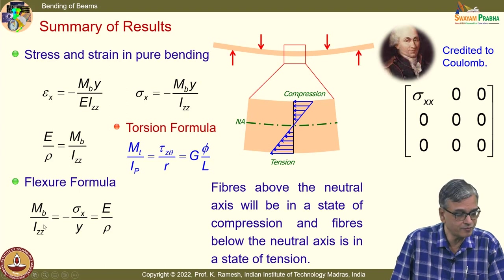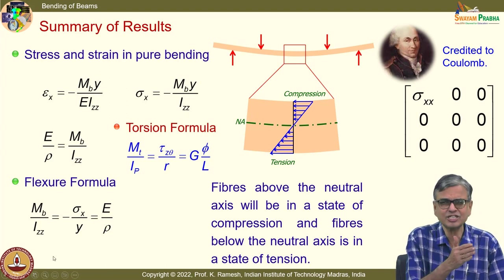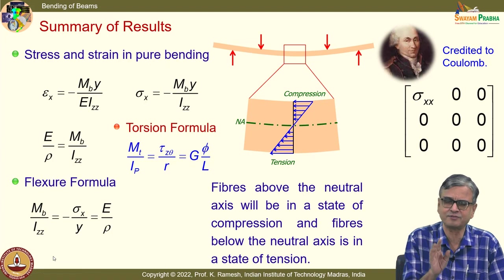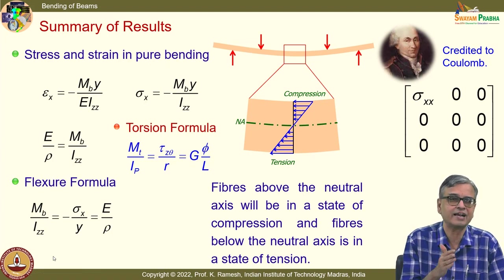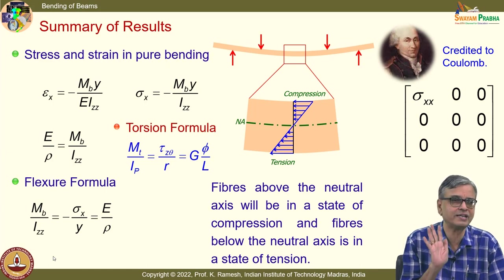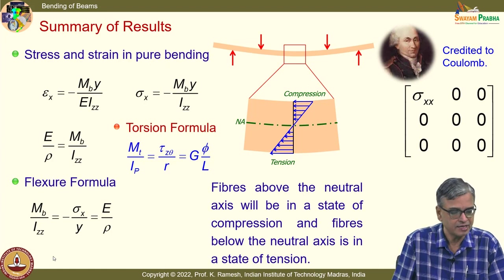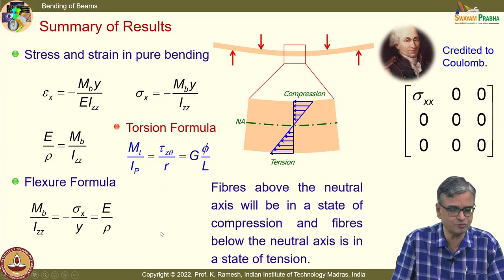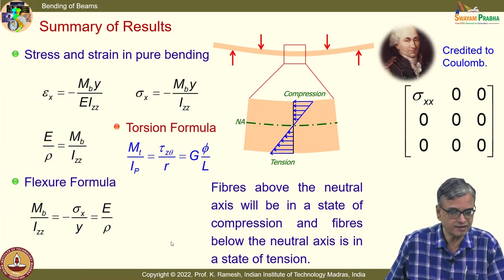Later on we dropped the ZZ subscript just to speed up writing. Once you understand the context — what is the axis and what kind of moment of inertia is meant — it is convenient to simply write I. You can compare the torsion formula and the bending formula — they are very similar and easy to recollect.